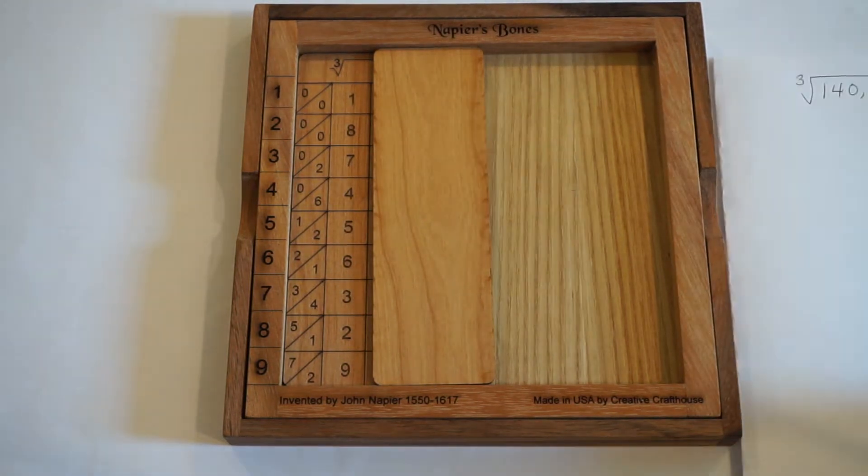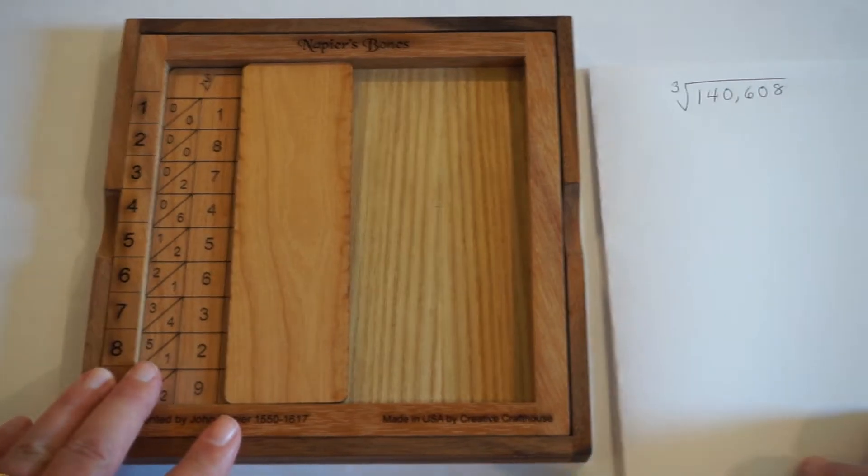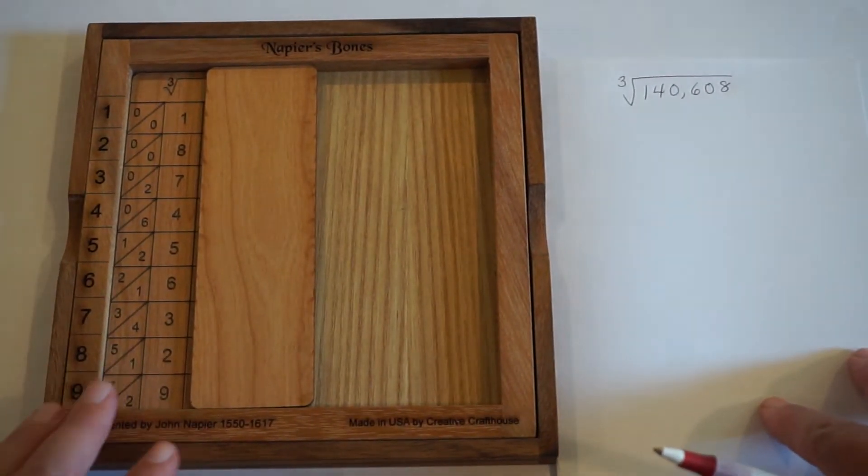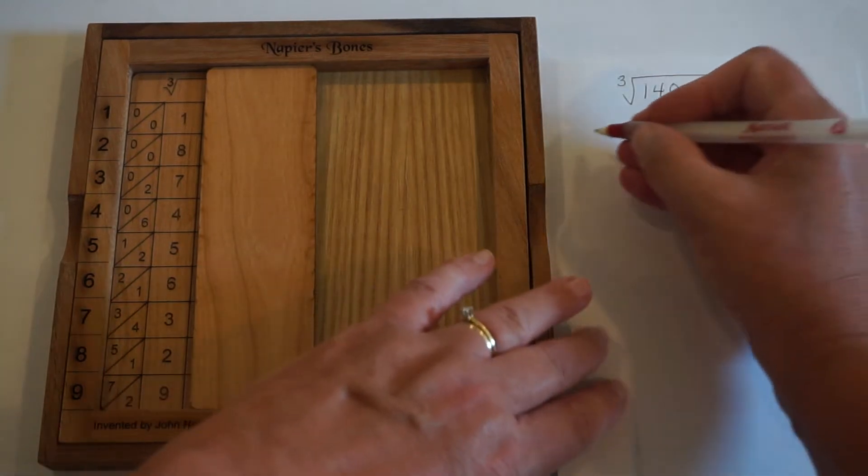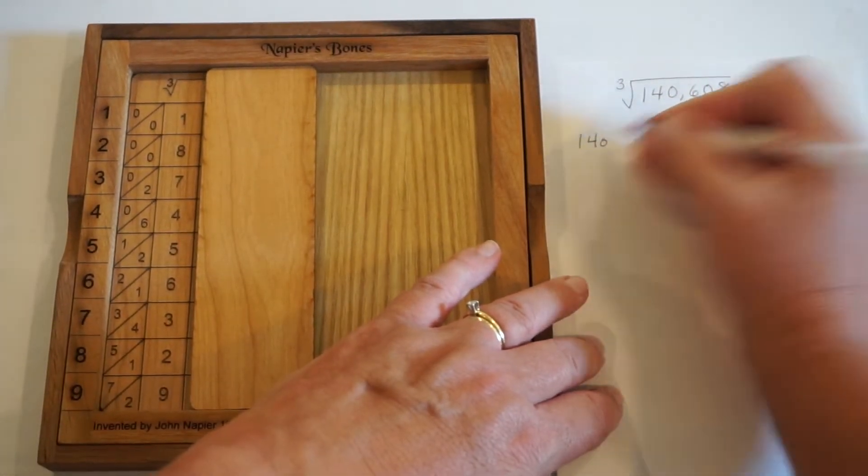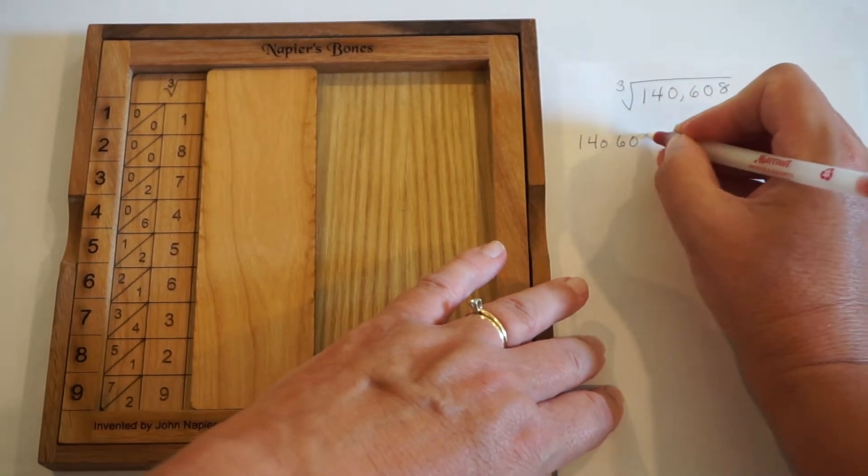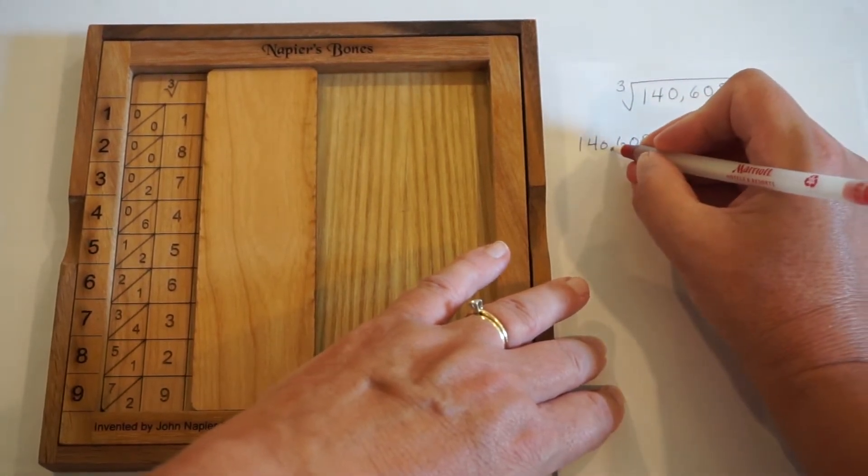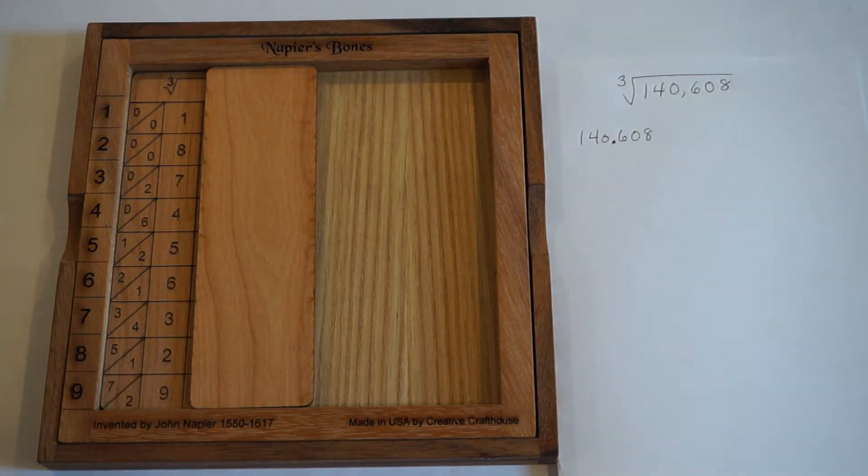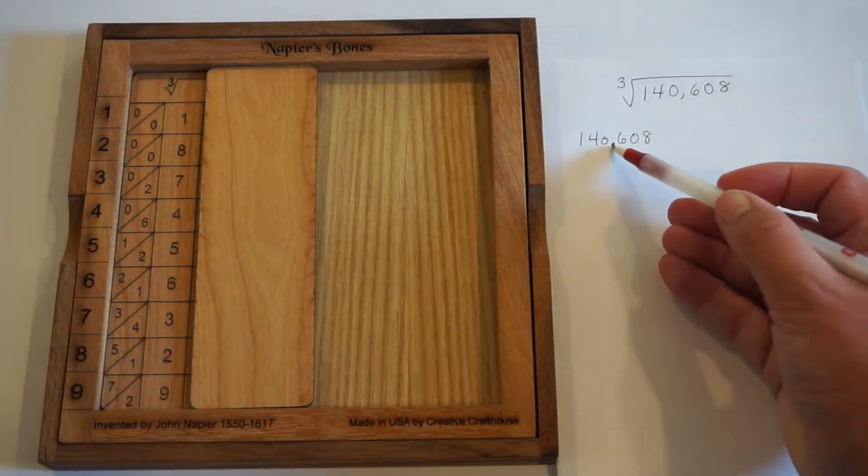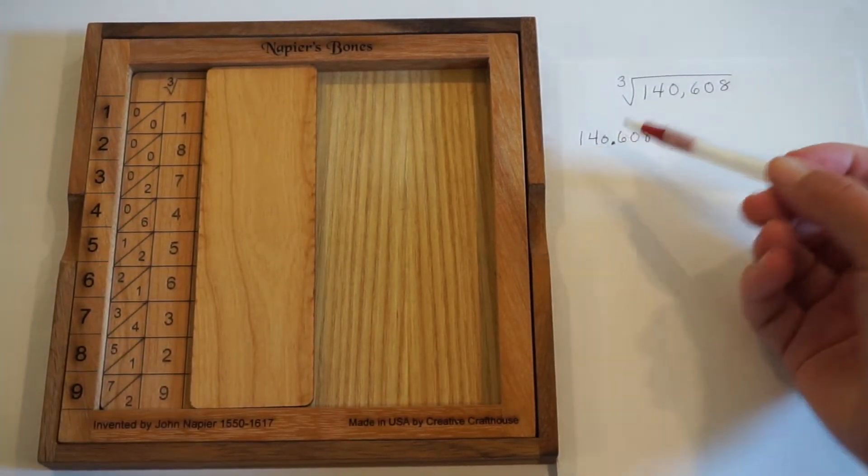And we're going to be taking the cube root of the number 140,608. In order to do that we take our number, write it, and split it up into triplets. If you've seen my video on square roots you know that you split numbers into doublets, but for cube roots we split them into groups of three or triplets. And what we're going to be looking for is a number that's close to 140 without going over.